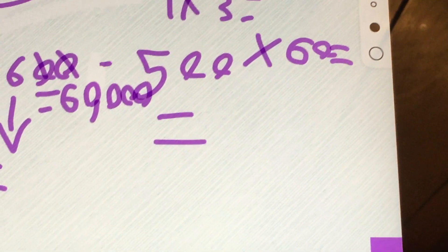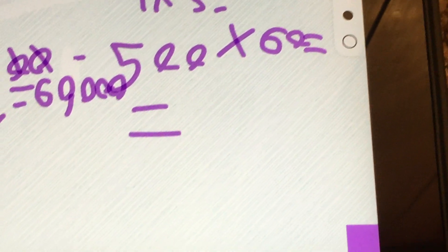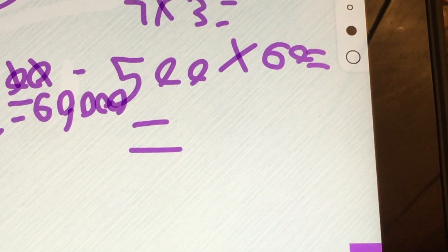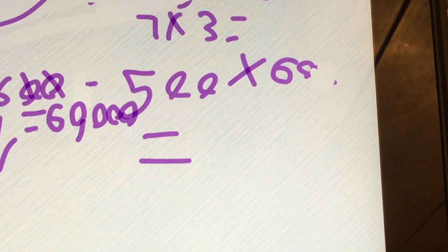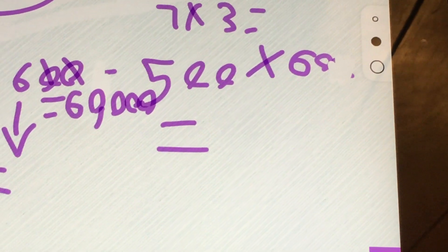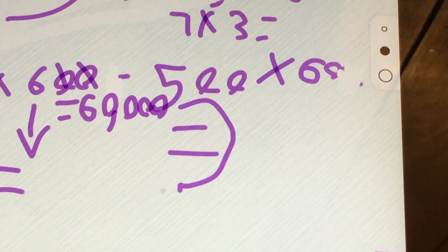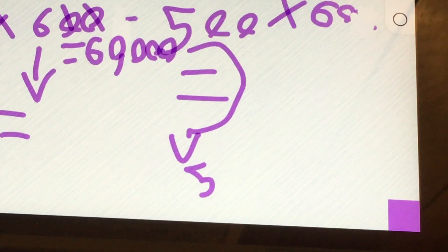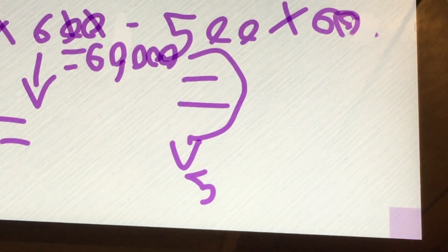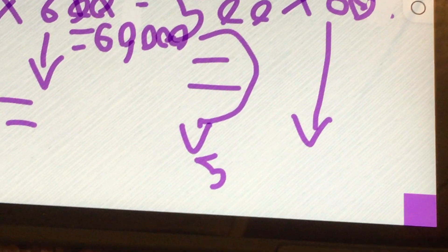Next is 500 times 60. You put the 500. Let me finish this. So the 5 goes down here, the 6 goes there.